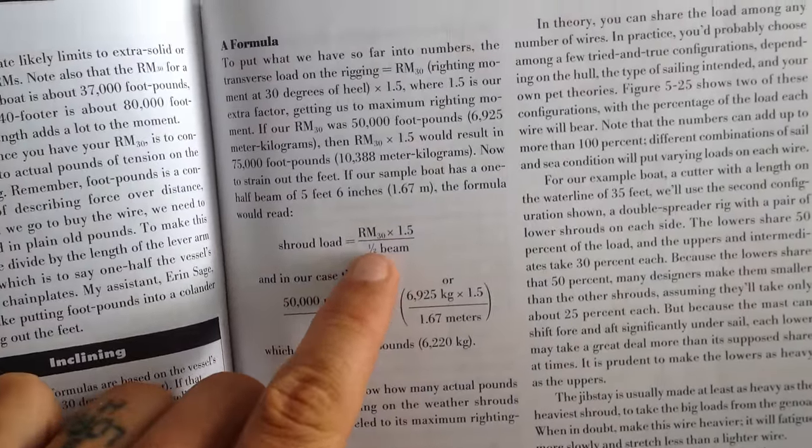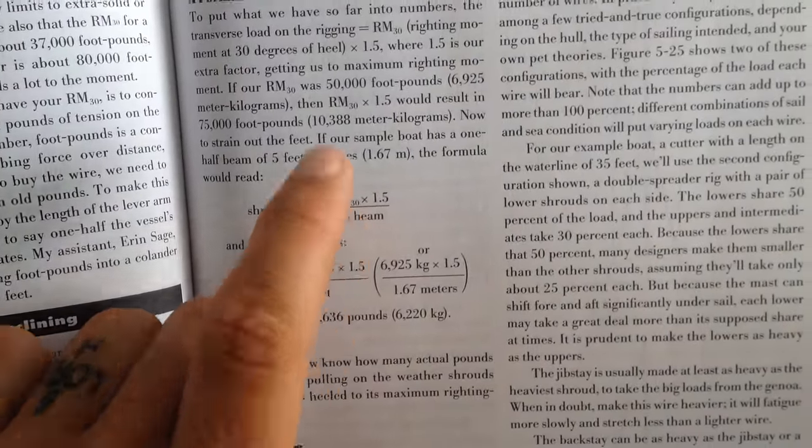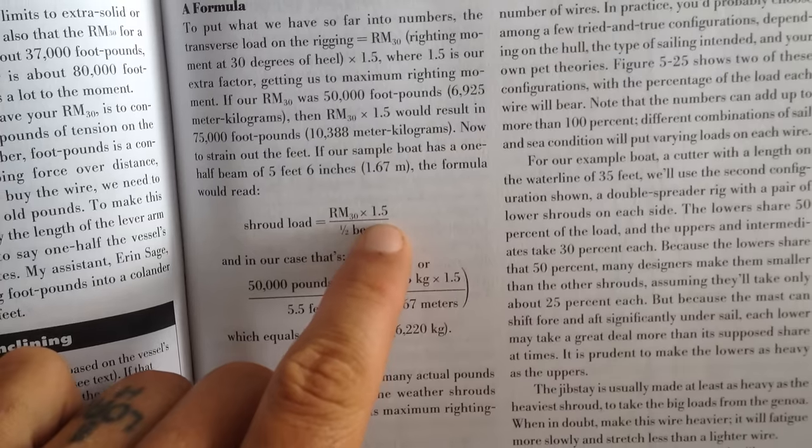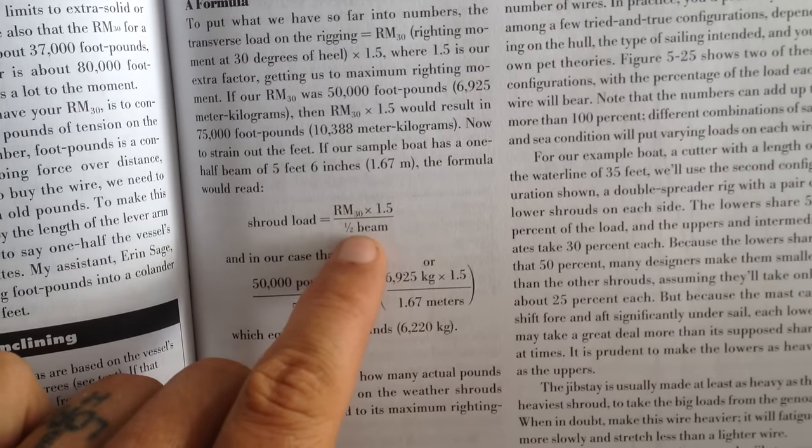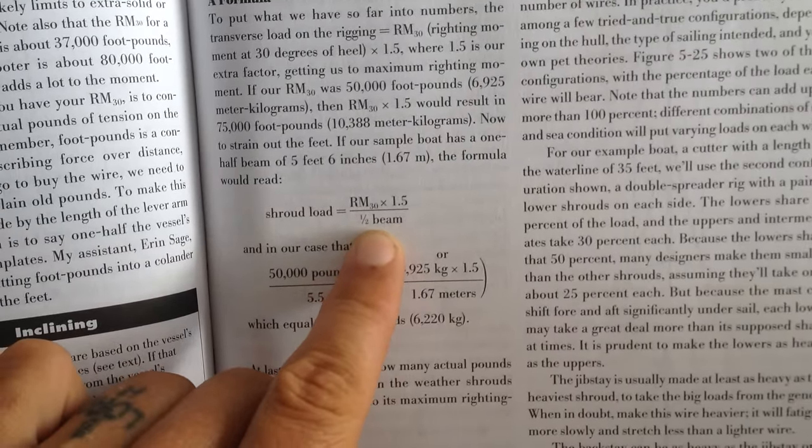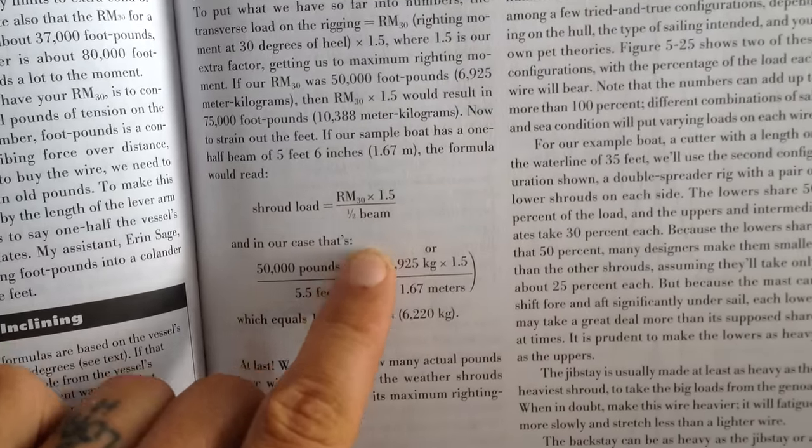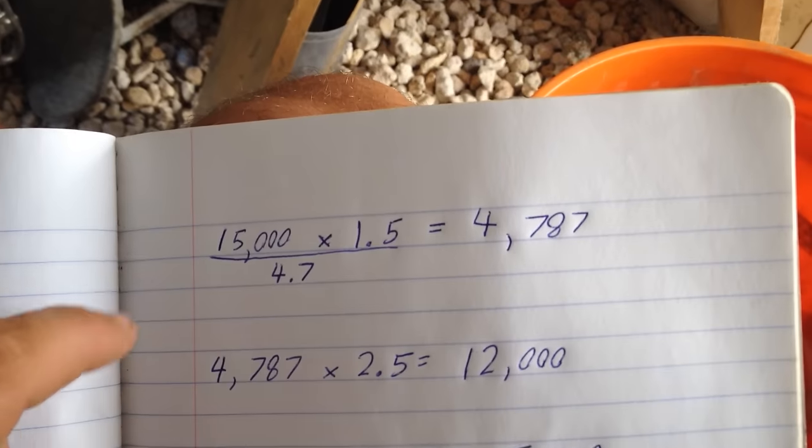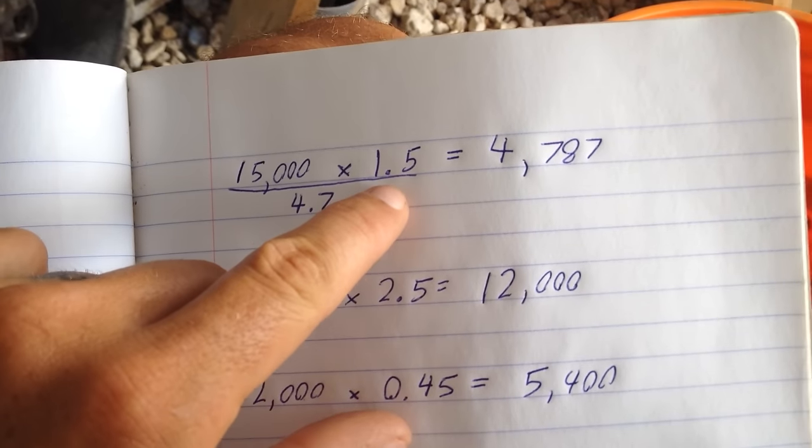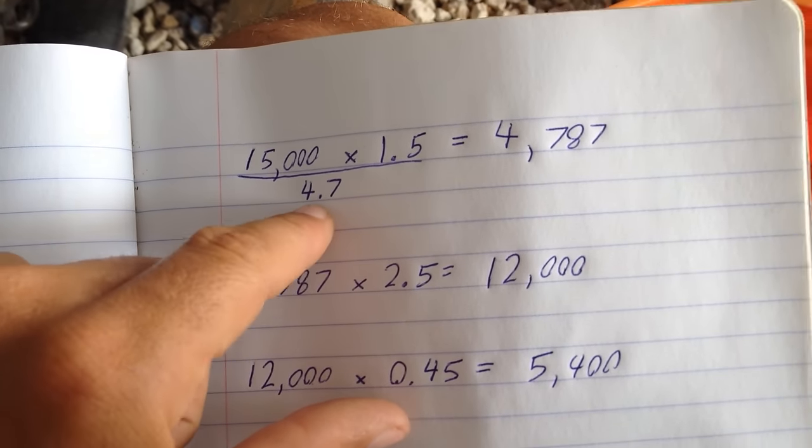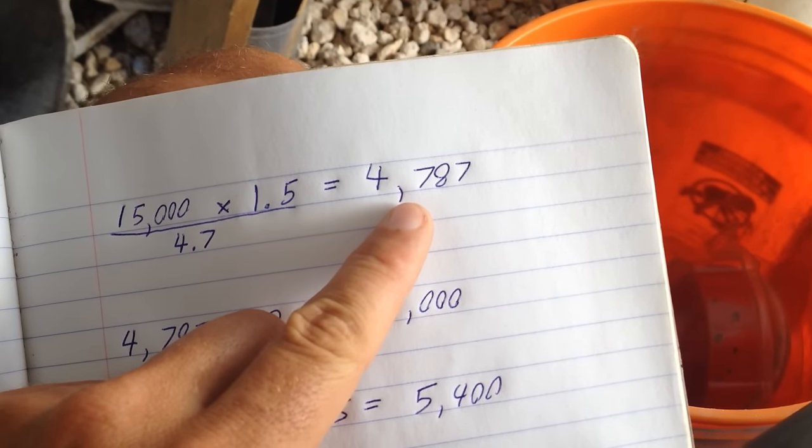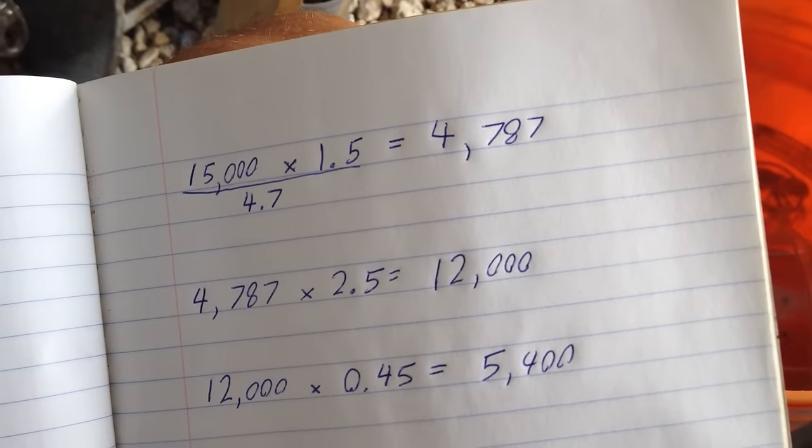And here is the calculation we're going to do. So our riding moment at 30 degrees of heel is what that is. So you multiply that by 1.5, it's kind of a safety factor. And then you divide it by half of your beam, or more exactly, the distance from the center line of the boat to your chain plates. So I did that up here. So we've got 15,000 is the number I got out of that graph. Multiply by 1.5 and divide by 4.7. That's the distance between the center line and the chain plates. You end up with this number right here, 4,787.